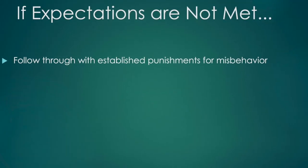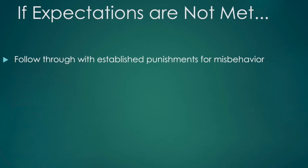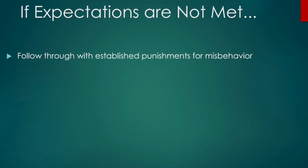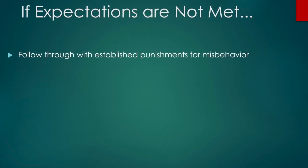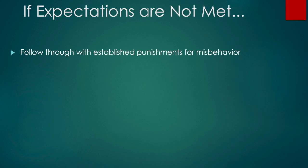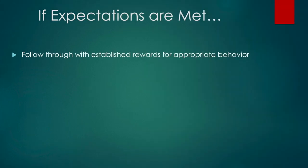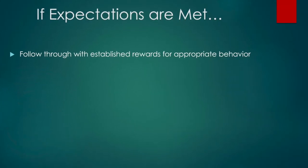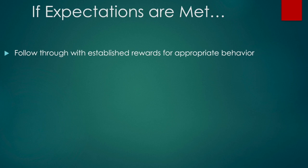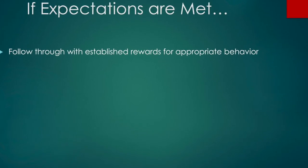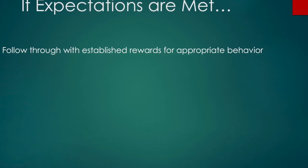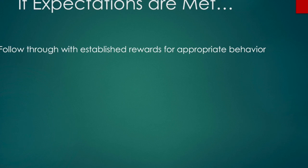If expectations in the classroom are not met, follow through with the established punishments for behavior — if a student misbehaves, you must refer to the six steps of assertive discipline. If expectations are met, follow through with the established rewards for appropriate behavior, such as jobs, verbal praise, or whatever rewards you have set in the classroom.